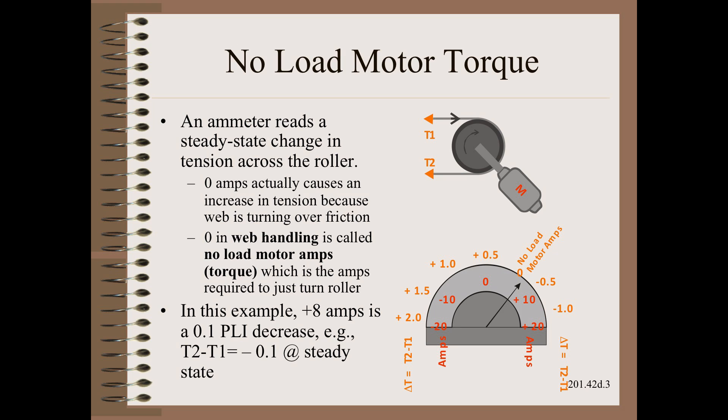If there were no torque applied to that roller motor, the large drag would cause a very large tension rise, meaning that the roll was wound at a much higher but unknown level of tension. To this torque, we must also add inertia compensation, which was also discussed in the web and winding schools.